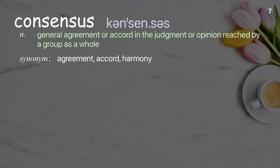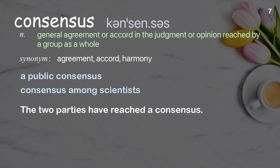Consensus: general agreement or accord in the judgment or opinion reached by a group as a whole. Examples: a public consensus, consensus among scientists. The two parties have reached a consensus.